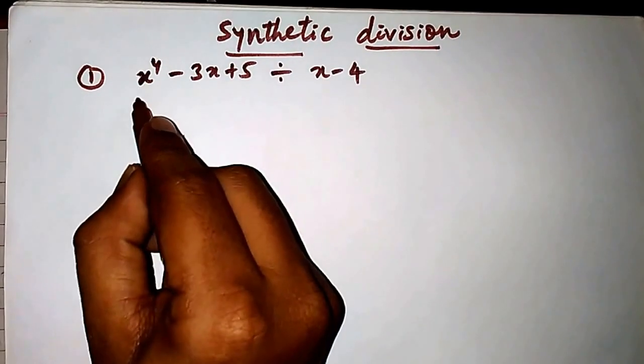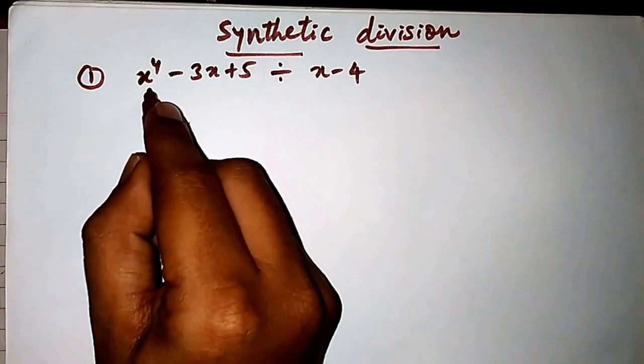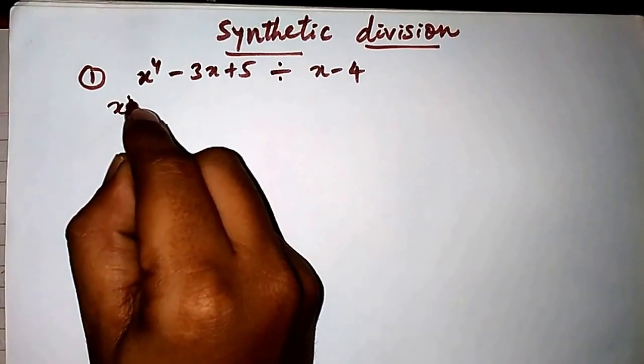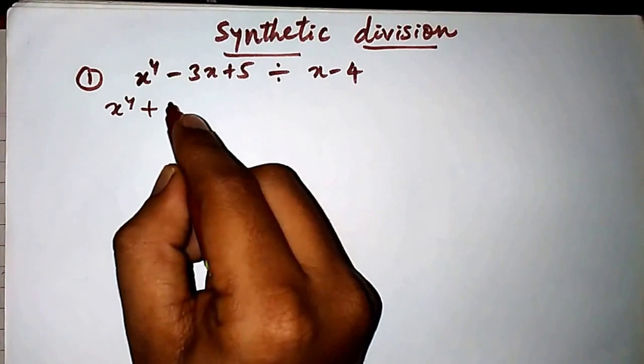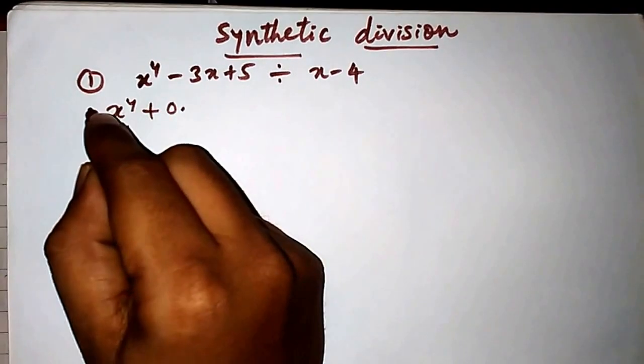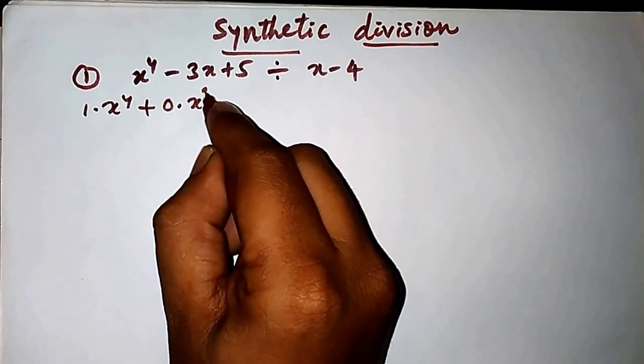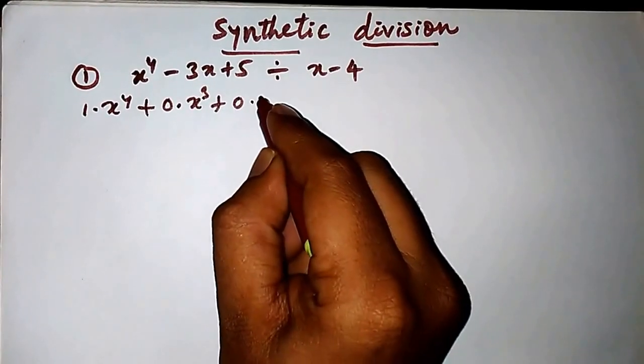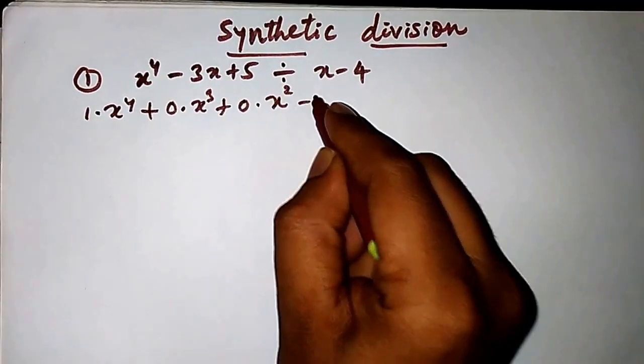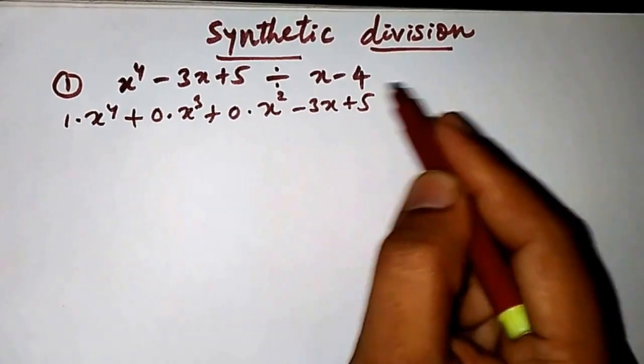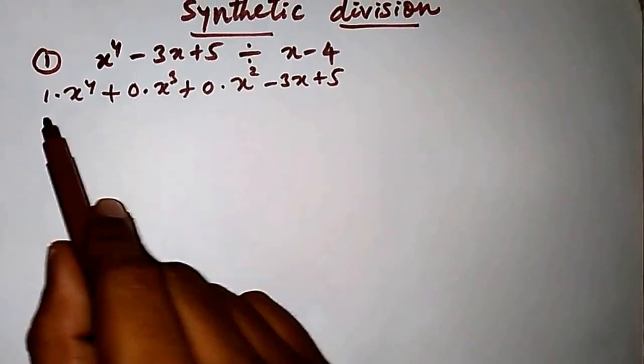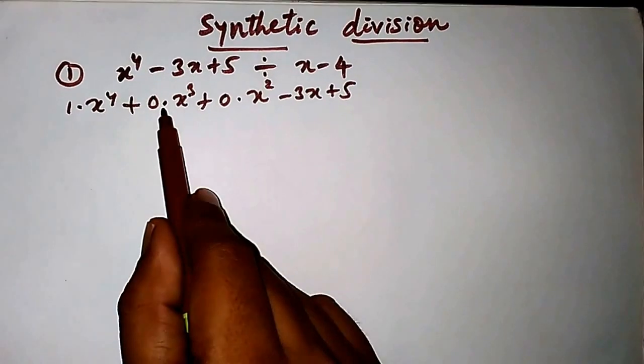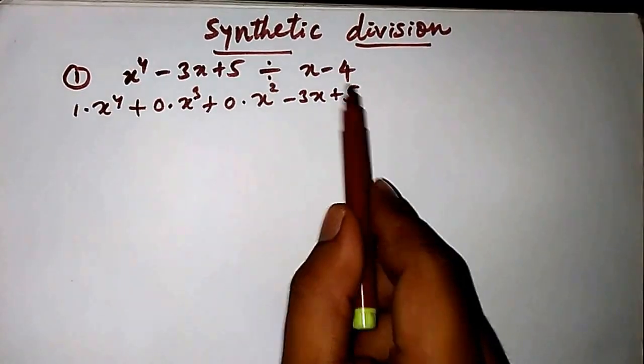Therefore you have to write this equation as x raised to 4 plus 0 times x cube plus 0 times x square minus 3x plus 5. From this you can find the coefficients of each variable: 1, 0, 0, minus 3, and 5.